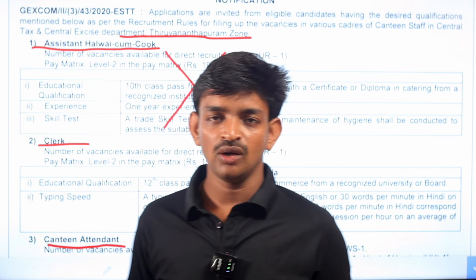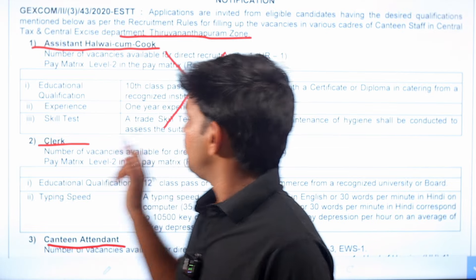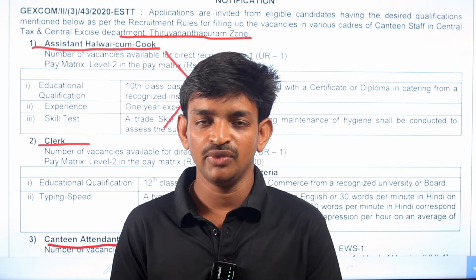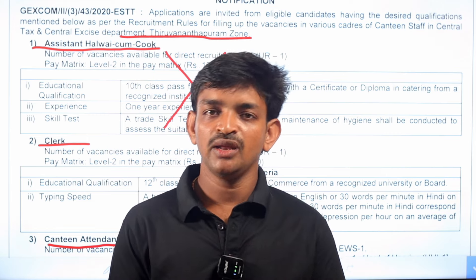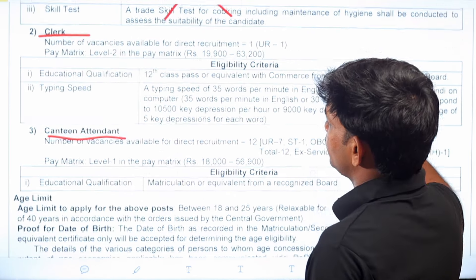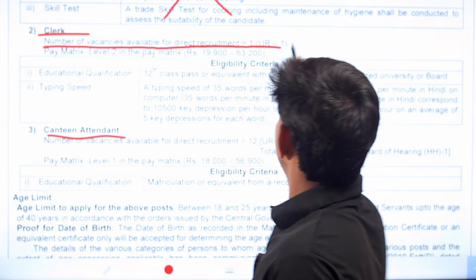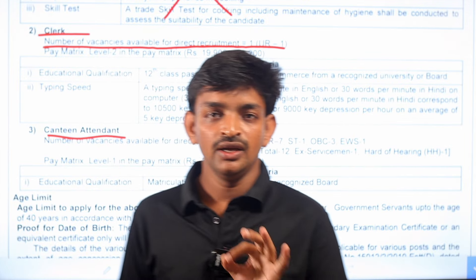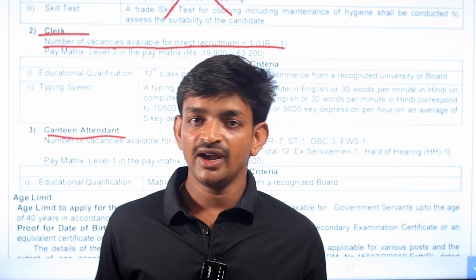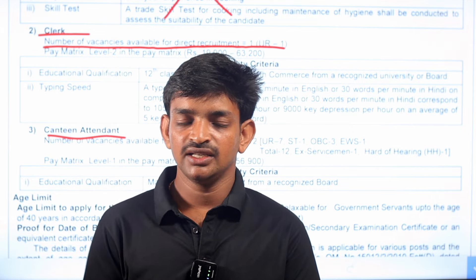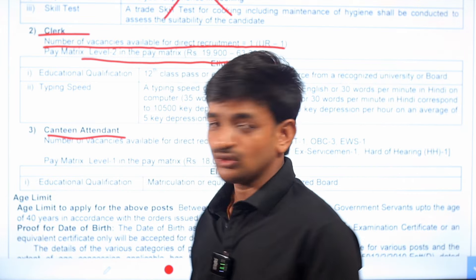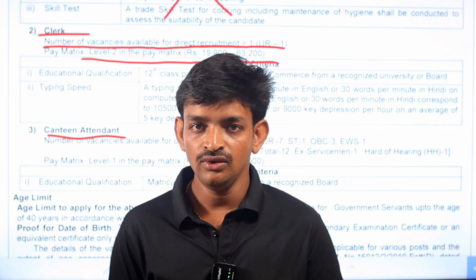The Assistant Halwai Cook job can be applied for with a 10th class qualification, but I will skip this job. For the remaining posts, I will show you the Clerk category. If you choose the Clerk category, I will show you the number of vacancies and how to apply under the open category. The salary for the Clerk post is at Pay Level 2, with basic pay higher than Level 2.